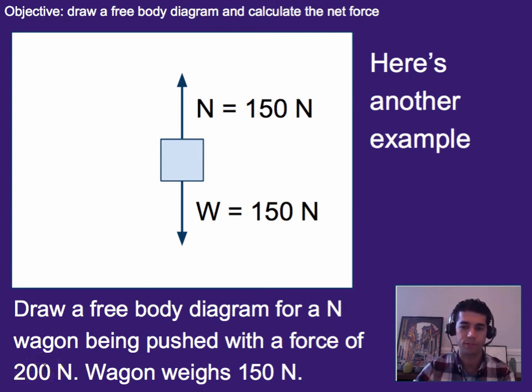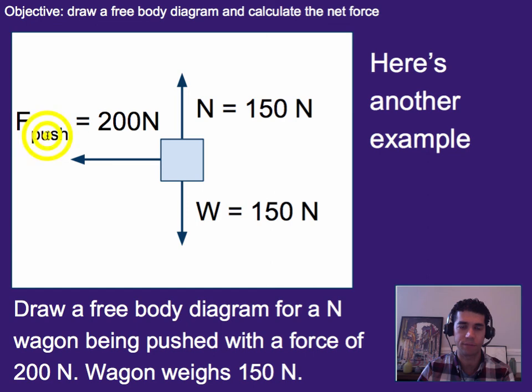But we also need to include the girl's push. So that one, since the girl was pushing it to the left, we would put a force on the wagon pushing it to the left. But I'd label it as F push. Just say that's from the push. And we say that's 200 newtons. Notice that these two vectors are the same size since these values are the same size. But this vector is slightly bigger than these because this is 200 instead of 150. So it should have a bigger vector.